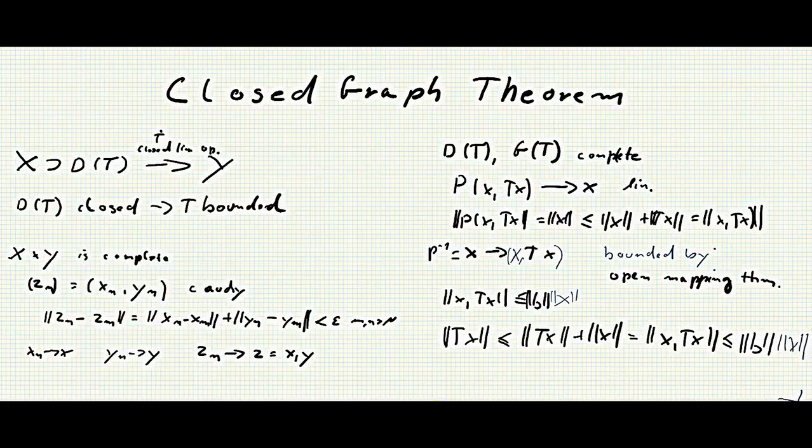Because the norm T(x) is of course smaller than the norm of Tx plus the norm of x, which is the norm of (x, Tx), which is by what we have just said smaller than b, I mean the norm of b, times the norm of x. And this is so for every x, and so we are finished. We have shown that the operator T is bounded.